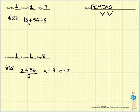Number 23. 13 plus 54 divided by 9. No parentheses. No exponents. No multiplication, but we do have division, so we're going to do that from left to right.